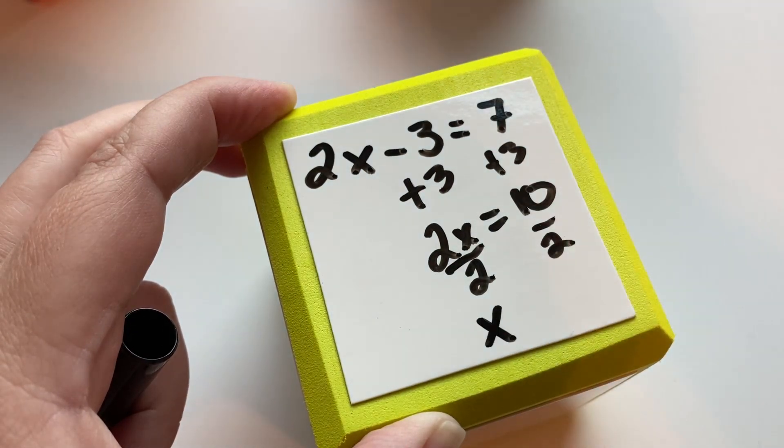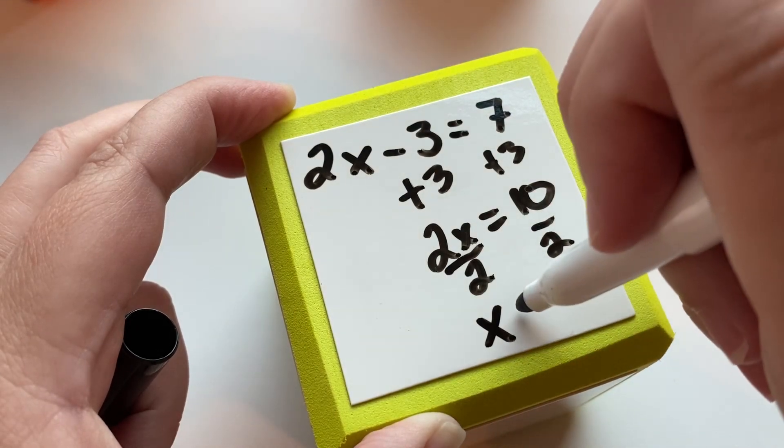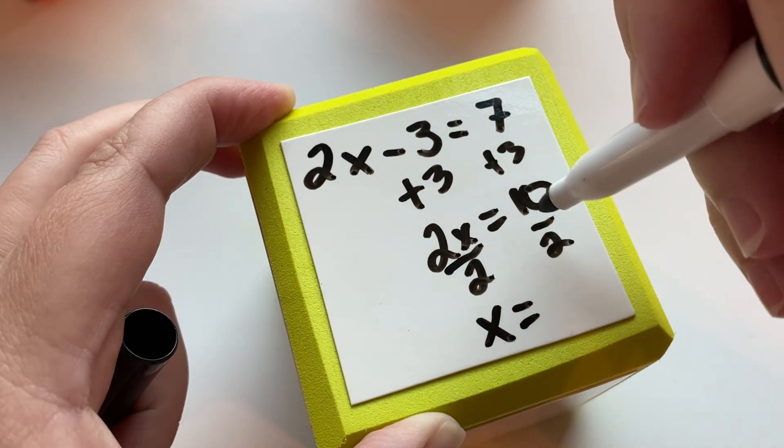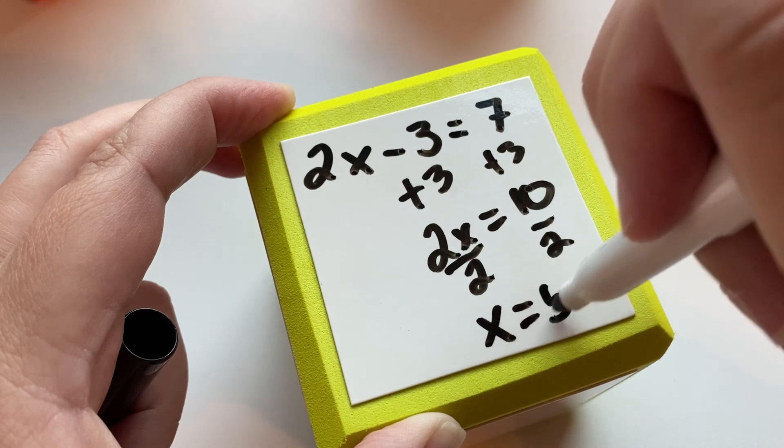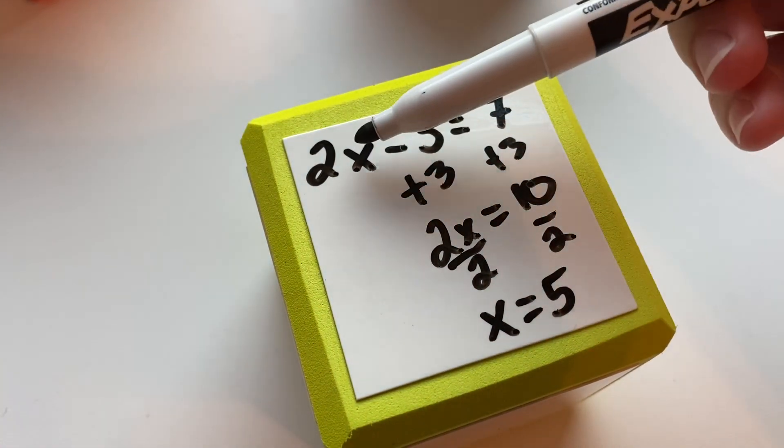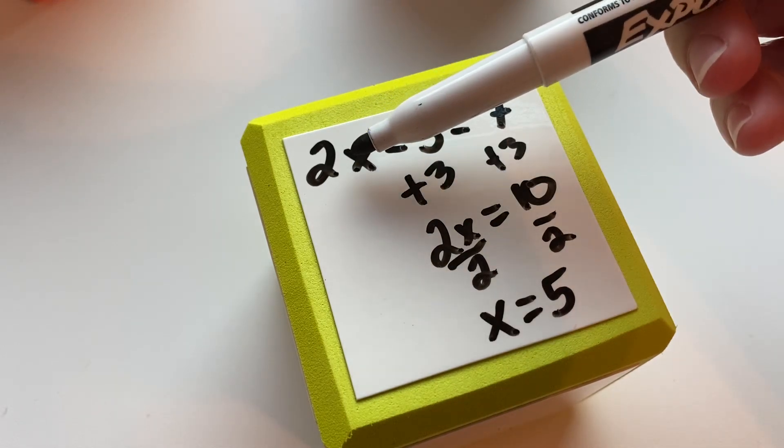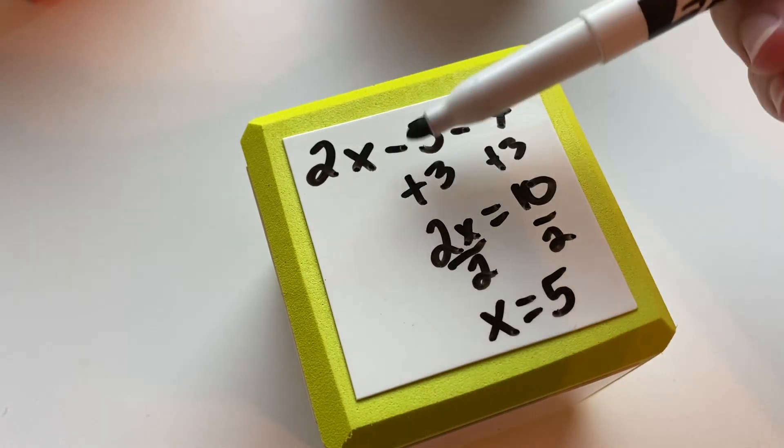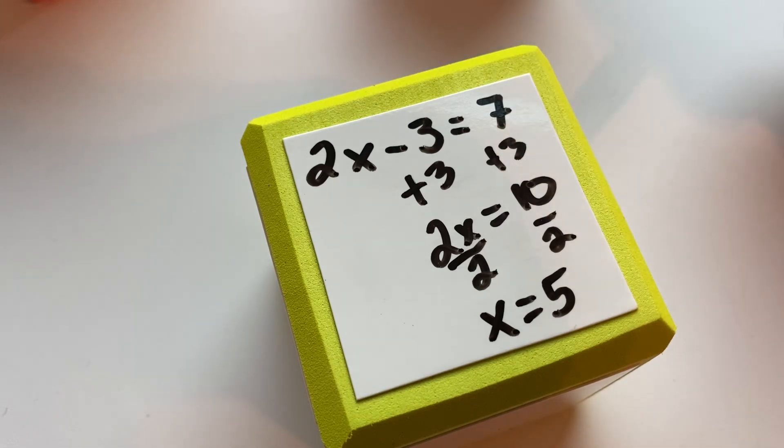And then two divided by two is one. You could write 1x, but typically we just put x, because that means that there's one. And then 10 divided by two is five. So x equals five. And you can take this five, and you can plug it in up here. You would have two times five, which is 10, minus three, which is seven, equals seven. That is correct. So that is the value for x.